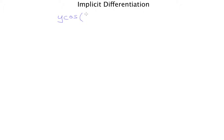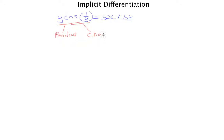The function is y·cos(1/y) = 5x + 5y. Right away you can tell this question is going to be challenging because we have a product of two functions, and one of these functions has a function within itself. We know this will require the chain rule, so this is one of the more difficult kinds of questions. But if you understand it, you'll be able to solve any other type of question that comes our way.